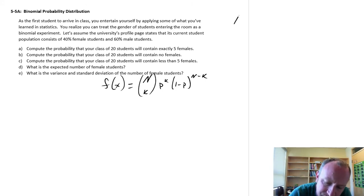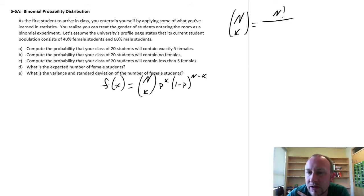This n choose k in brackets would be equal to the factorial, same formula we saw when we were looking at combinations and permutations. So n factorial divided by k factorial times (n minus k) factorial.